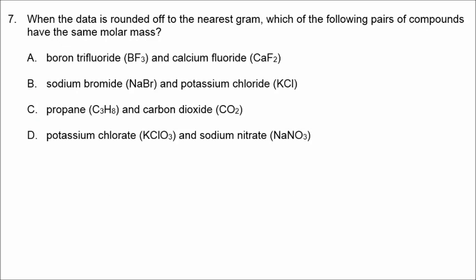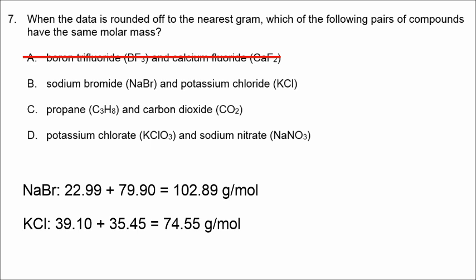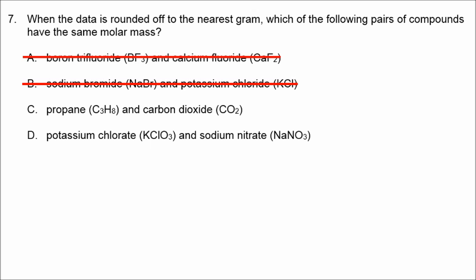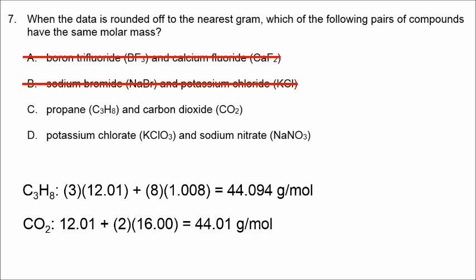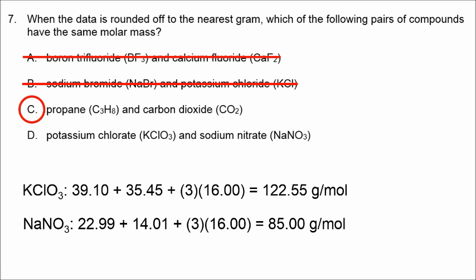In number 7, we're looking for the formula mass, or the molar mass, of each compound. And the correct answer is the pair of compounds that has the same molar mass. If we look at the numbers for BF3 and CaF2, those numbers are not equivalent. 67.81 versus 78.08. I'm just showing my work on how I calculated the molar mass. So, the correct answer is not A. With sodium bromide and potassium chloride, those numbers are 102.89 versus 74.55. So, letter B is also not the correct answer. Letter C, those molar mass values are 44.094 and 44.01. So, that is our correct answer. And just to confirm, the reason why letter D is incorrect, we have molar mass values of 122.55 for potassium chlorate versus 85.00 for sodium nitrate.